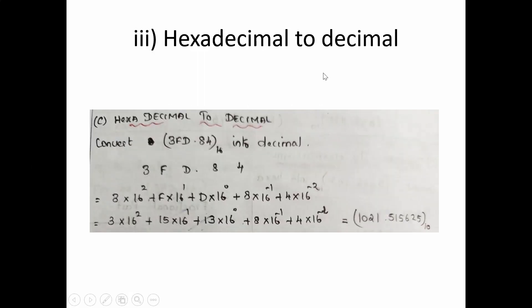Next is hexadecimal to decimal. If the given is hexadecimal — the radix can be written as 16 or h, both are the same. We should know the number for each hexadecimal character: 0–9 are the same, then A=10, B=11, C=12, D=13, E=14, F=15.